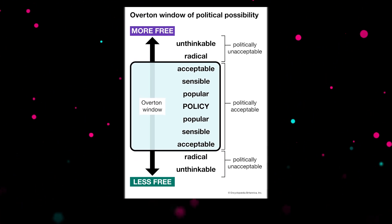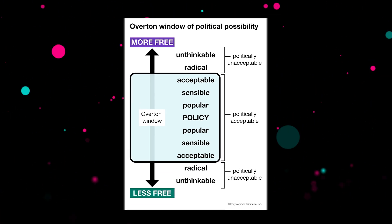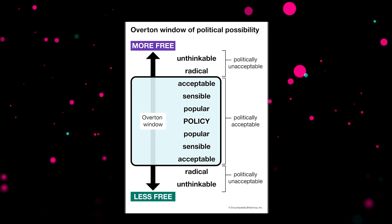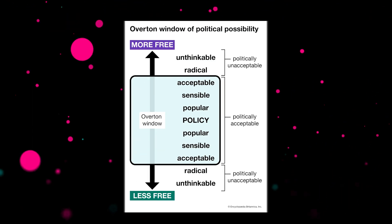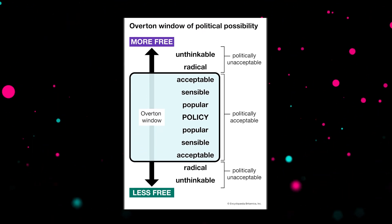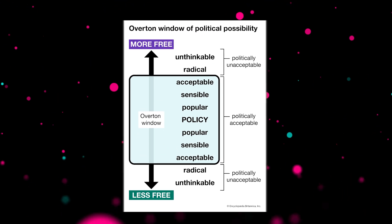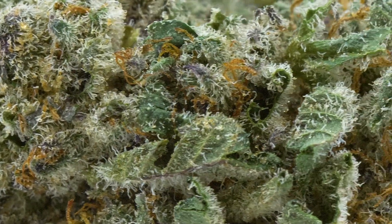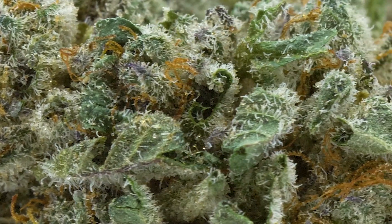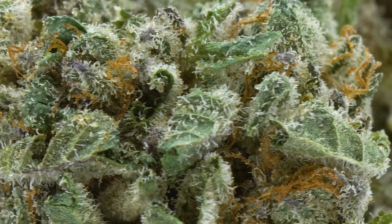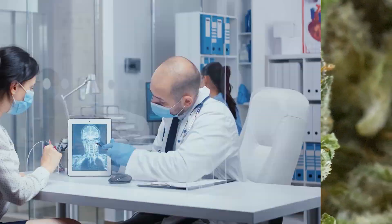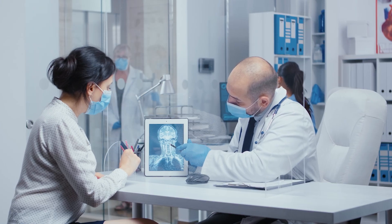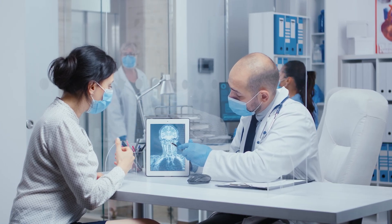Just above and below policy are ideas that are popular but have not been implemented in policy. This can include cannabis legalization in many countries that have not legalized it yet, or in the US it could include government-provided universal healthcare.